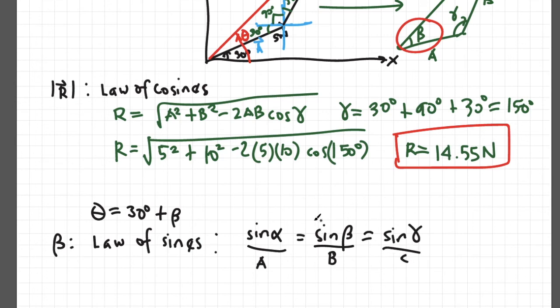Now we can actually use just one equation. Like for example, sin alpha divided by A equals sin beta divided by B, or sin beta divided by B equals sin gamma divided by C.